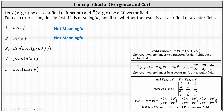For number three, we start with the innermost parentheses. We have the gradient of the function f, which results in a vector field. Next, we take the curl of that vector field, which results in another vector field. And then finally, we find the divergence of that vector field, which results in a scalar field or function. Number three is meaningful, and it is a scalar field or function.